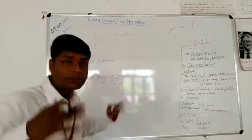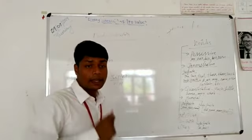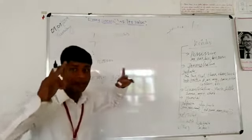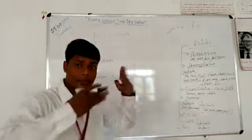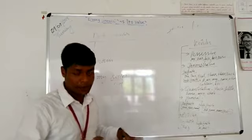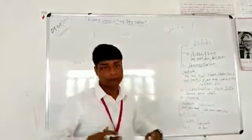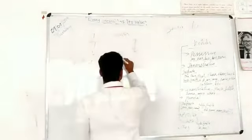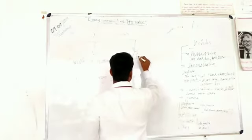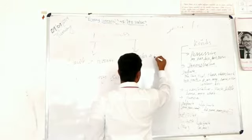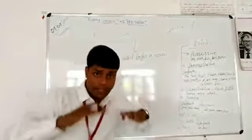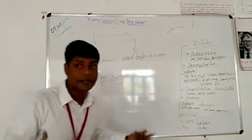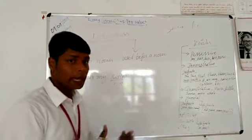Here is an easy trick to find determiners: first, find the noun, and the word that is used before the noun is the determiner. A determiner is always used before a noun. So in the sentence 'she is my sister,' 'sister' is the noun, and the word used before 'sister' is 'my.'